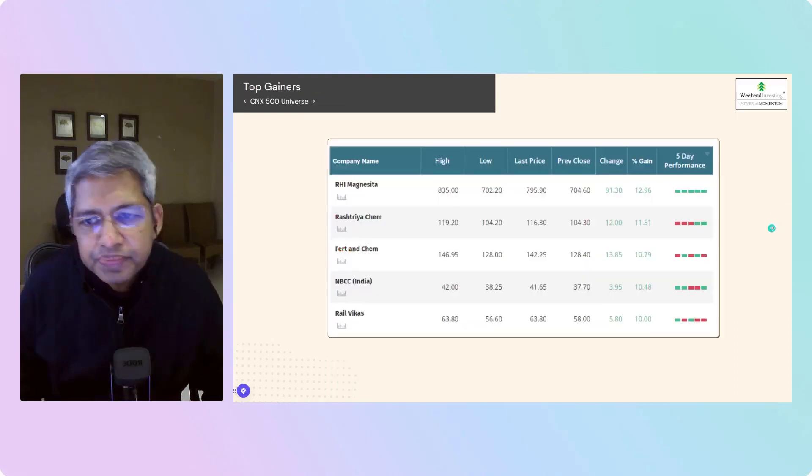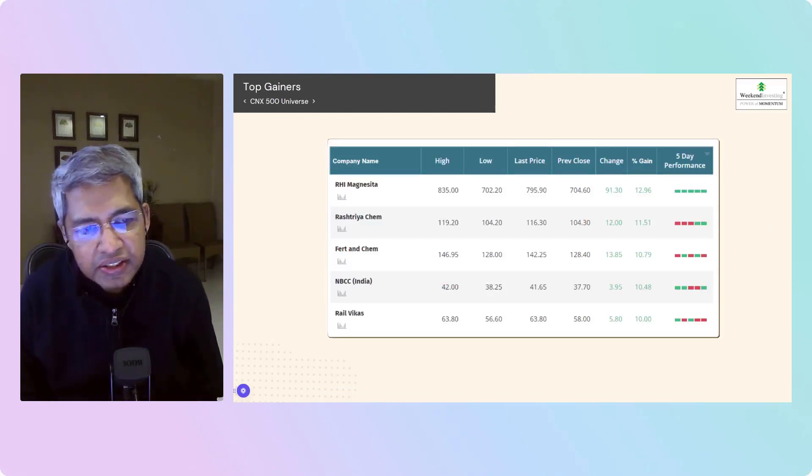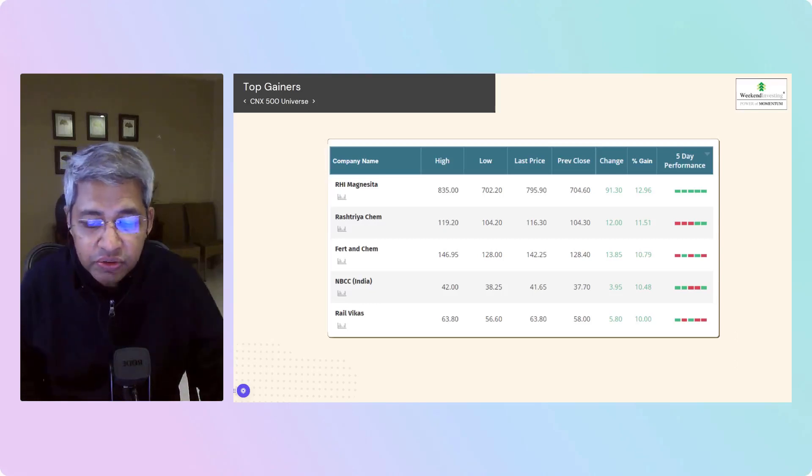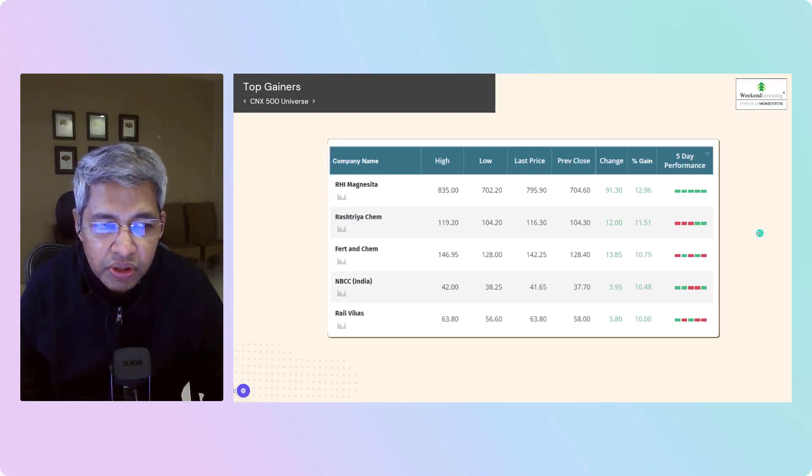Top gainers: RHI Magnesita up 13%, Rashtriya Chemicals and Fertilizers 11.5%, Fertilizer and Chem up 10.7%, NBCC up 10.5%.